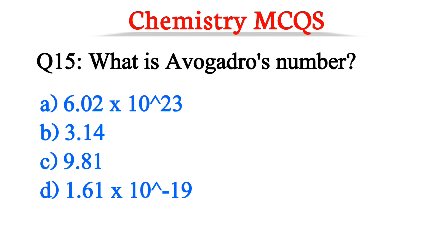Question number 15. What is Avogadro's number? The correct option is option A, 6.02 × 10 to the power 23.